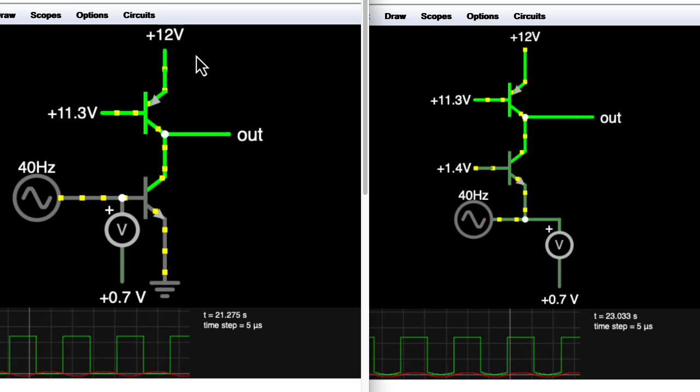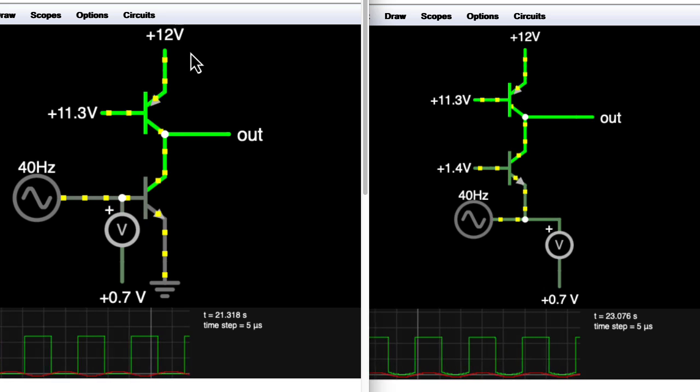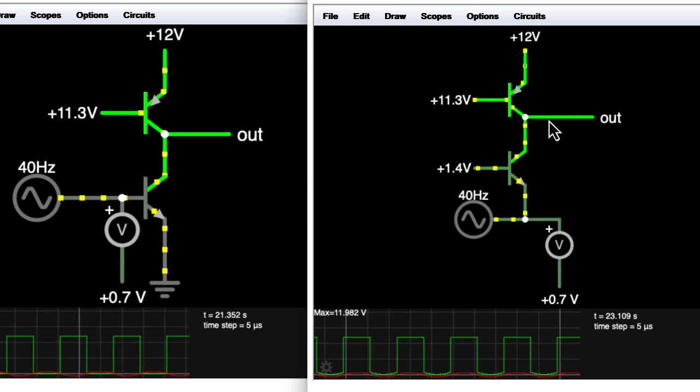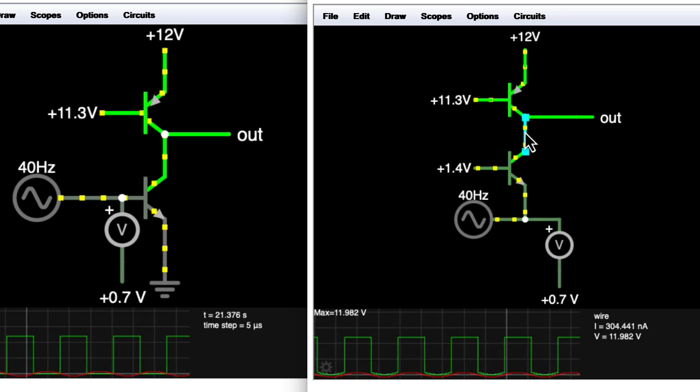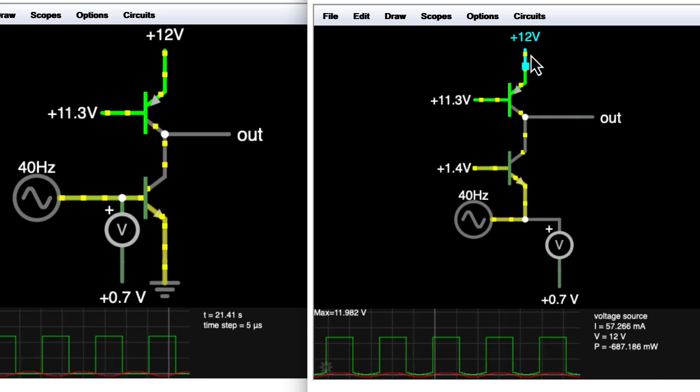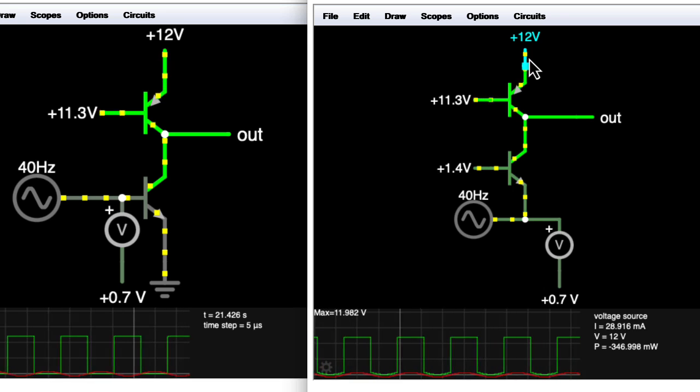I find that to be confusing terminology, so I prefer to say the ohmic region. And you can see a similar thing up here, so if you don't see any current moving here, but you see all the current moving up here, that means that this transistor is not in the active region.